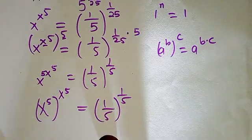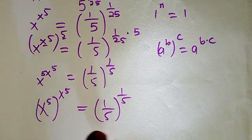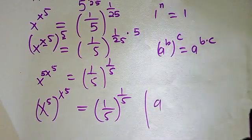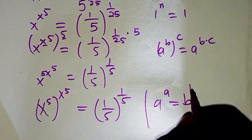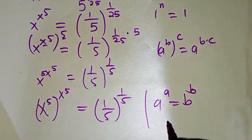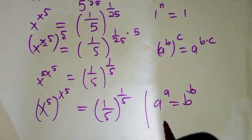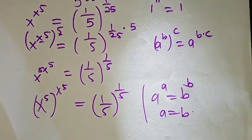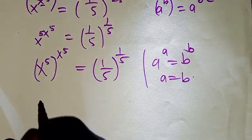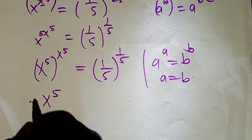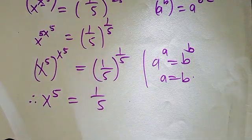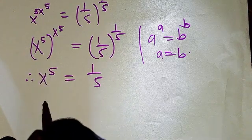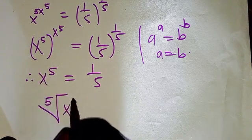Looking at both sides of the equation, we can see a pattern of the form a to the power a equals b to the power b. Whenever you have this form, comparing both sides shows that the bases must be equal, so a equals b. Therefore, comparing x to the power 5 raised to x to the power 5 with 1 over 5 raised to 1 over 5, we conclude that x to the power 5 equals 1 over 5.